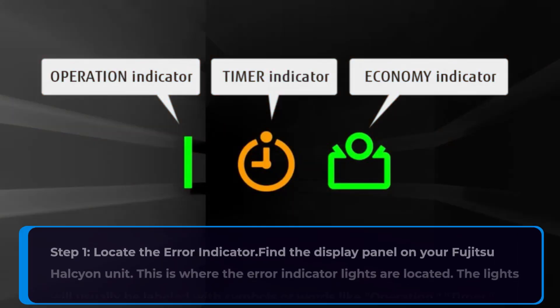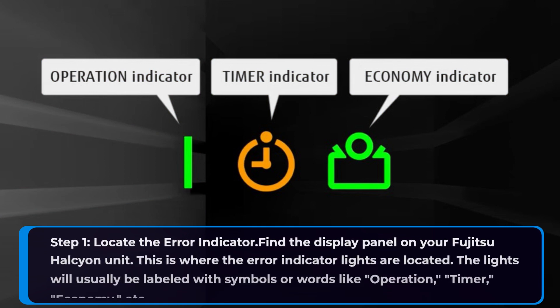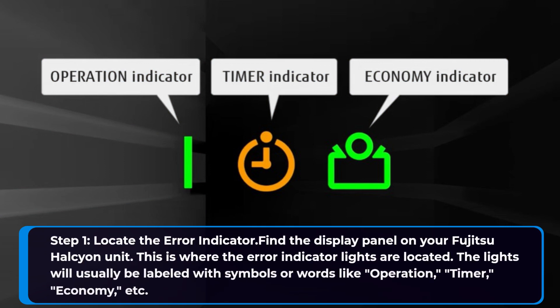Step 1: Locate the error indicator. Find the display panel on your Fujitsu Halcyon unit. This is where the error indicator lights are located. The lights will usually be labeled with symbols or words like operation, timer, economy, etc.